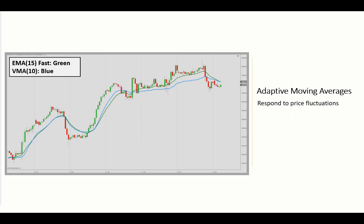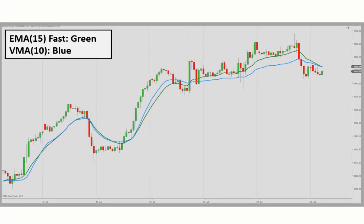A well-known adaptive moving average is the VMA, also known as Vidya, as introduced by Tushar Chande. That stands for Variable Index Dynamic Average. Interestingly, it also figures prominently in texts pertaining to Indian philosophy, and primarily means "correct knowledge" — and that's fitting for this indicator. The VMA is a moving average that uses market volatility to determine the smoothing factor.